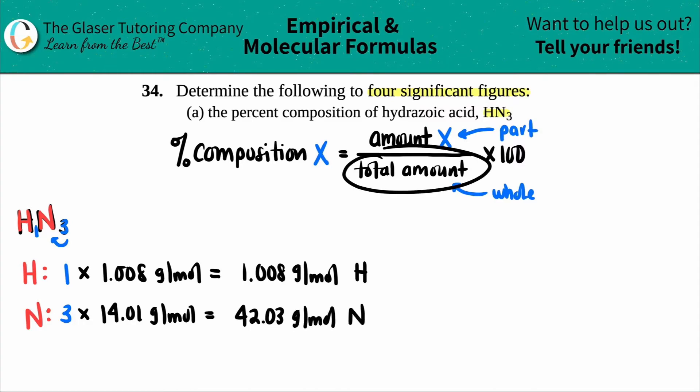Now, in order to get the total amount, we have to find the total molar mass, aka we add the two numbers up. So 42.03 plus 1.008, I get 43.038. And that's the grams per mole of the entire compound, aka HN3.